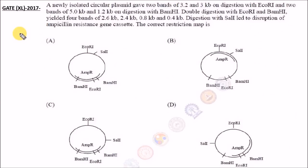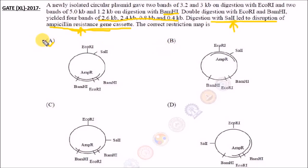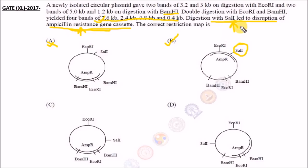This question came in the GATE Life Sciences paper 2017. Digestion with SalI leads to disruption of the ampicillin resistance gene. From this statement you get the idea that the SalI site must be present within the ampicillin resistance gene. You can see in the four options given that SalI is present within the ampicillin resistance gene in option B, so B is the correct answer. You don't need to go for the other fragments for BamHI or EcoRI — the question can be solved with this one simple statement.